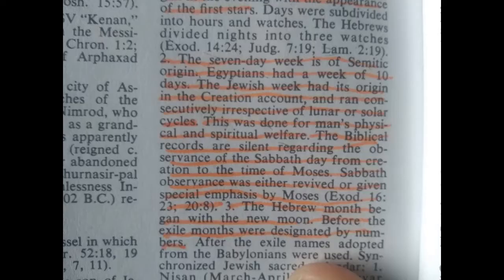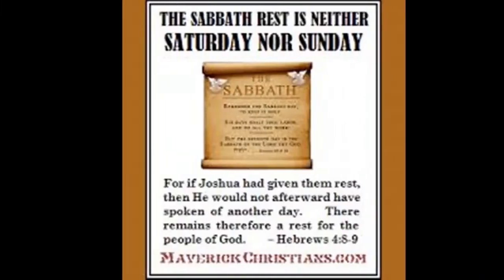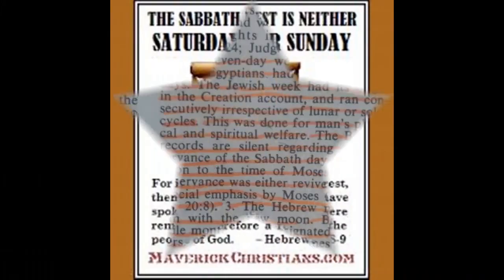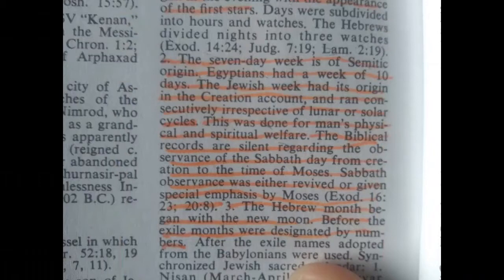This was done for man's physical and spiritual welfare. The biblical records are silent regarding the observation of the Sabbath day from creation to the time of Moses. So if that's the case, where did the Saturday Sabbath come from? Ask yourself that. Sabbath observance was either revived or given special emphasis by Moses. The Hebrew month began with the new moon; before the exile, months were designated by numbers.